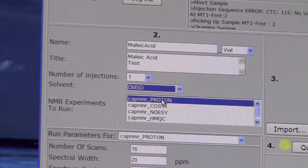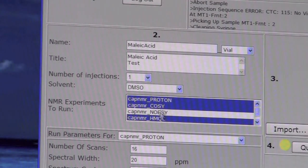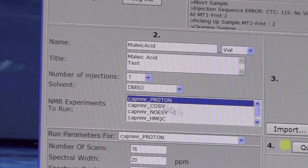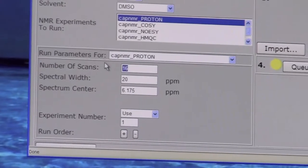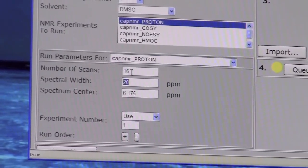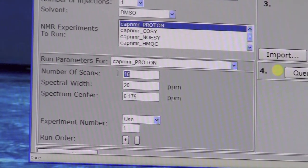And then choose the experiment. To choose multiple experiments, use control and select multiple experiments. If you just want to select one experiment, then just pick the one you want to run. To customize the experiments, pick which experiment you want to customize, and then change items about that experiment, such as the number of scans or the center of the spectrum. So if you wanted to put in more scans, you could do that here.